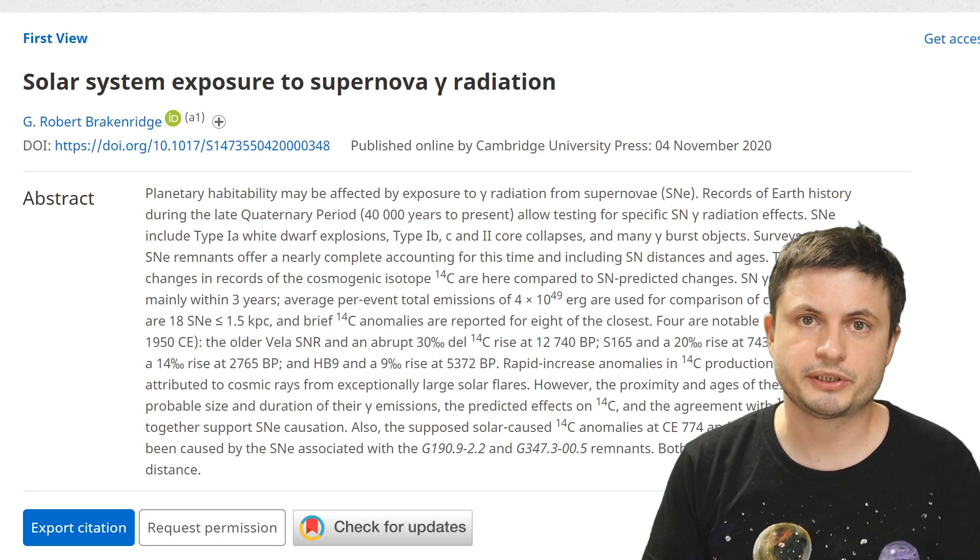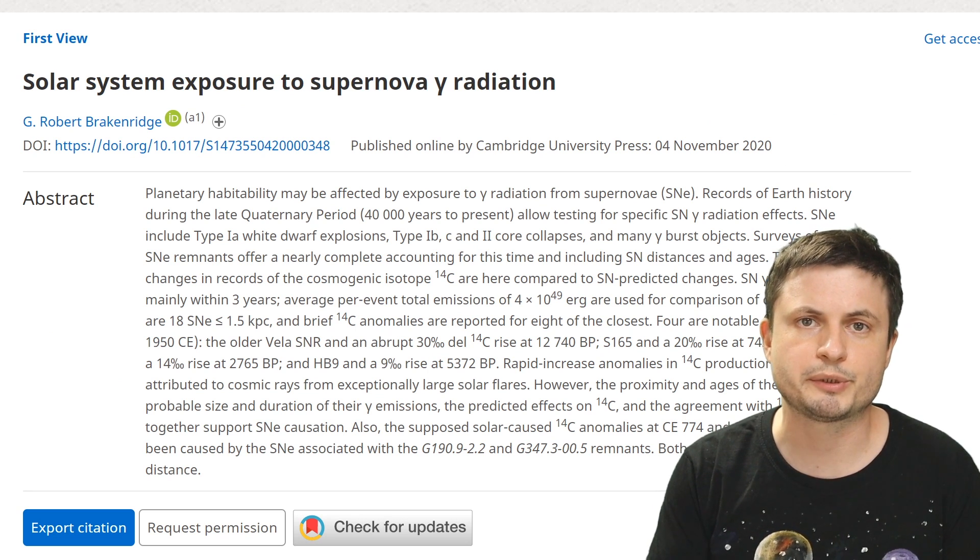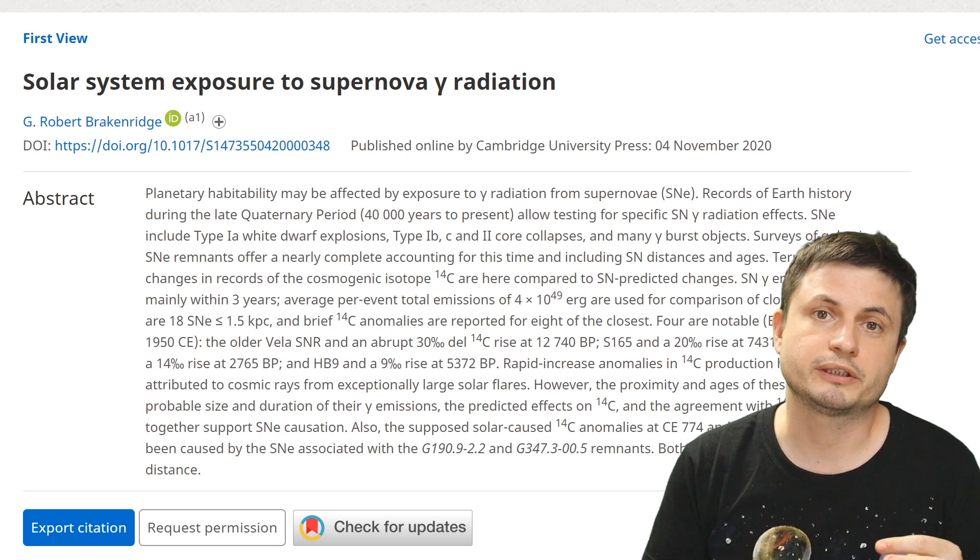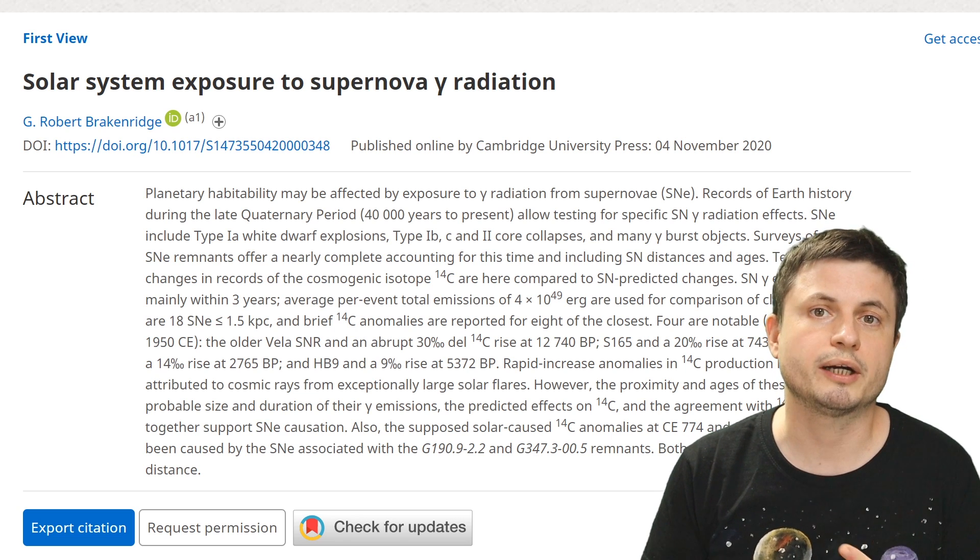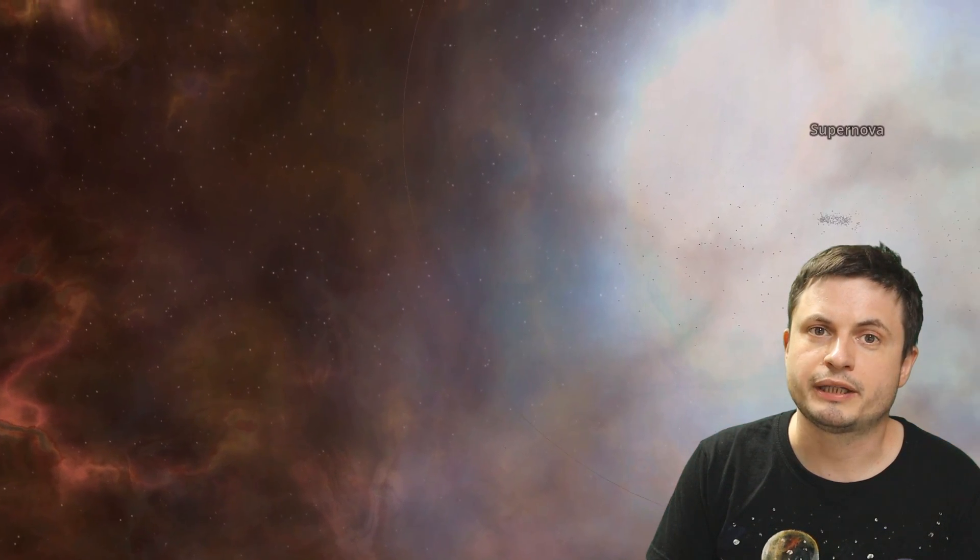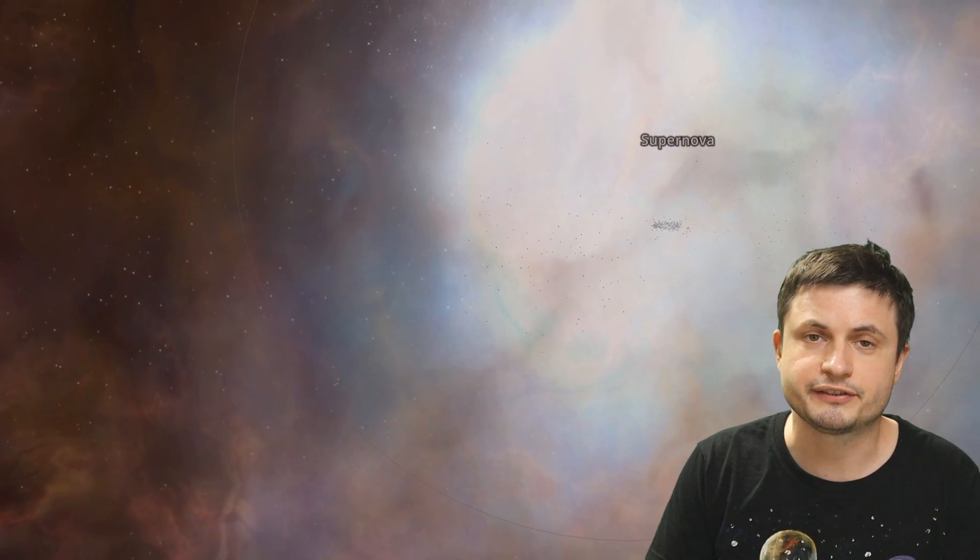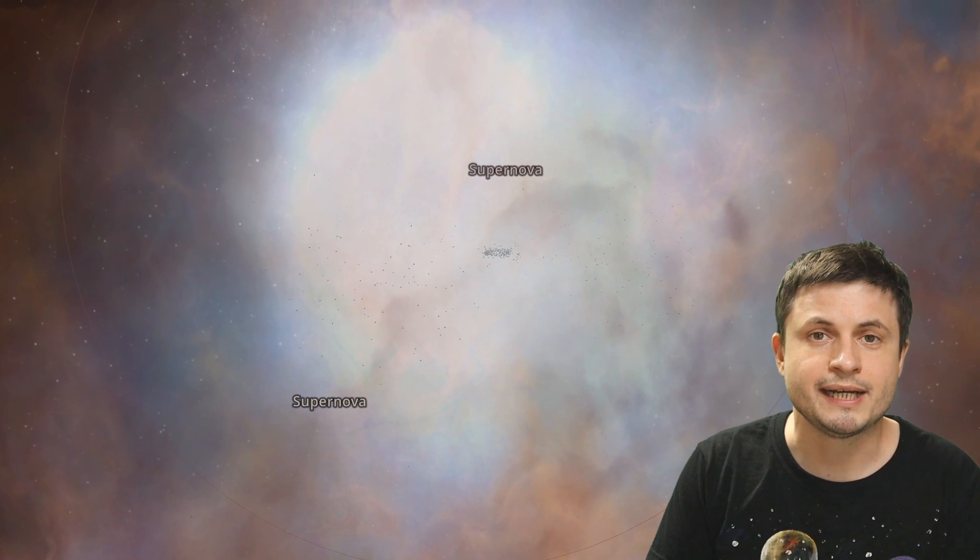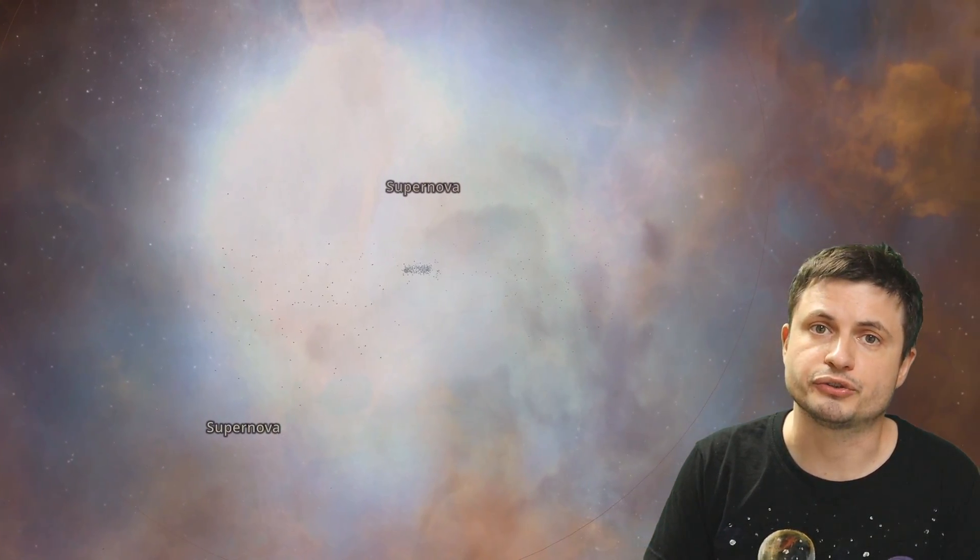But very recently, this particular study that you can also find in the description below, argued that there were at least four major events that were not solar, they were not sun-related. In other words, four events that happened in the last 40,000 years may have actually been caused by something a lot more energetic, a distant supernova in this case. And specifically in this paper, the scientists were able to identify four unique events that most likely were supernova that happened in the last 15,000 years.